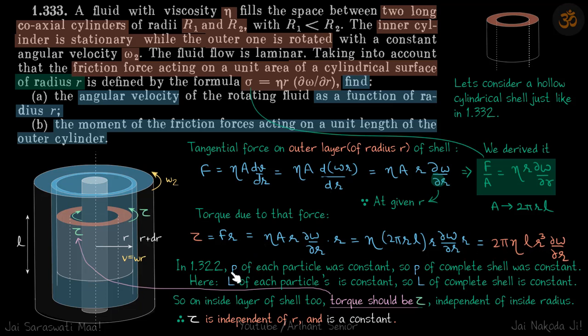Now, in the previous problem, momentum of each particle was constant, so momentum of complete shell was also constant. Here, angular momentum of each particle is constant because each particle is rotating with a constant angular velocity omega, whatever its omega is. So L of each particle is constant, so L of complete shell is constant.